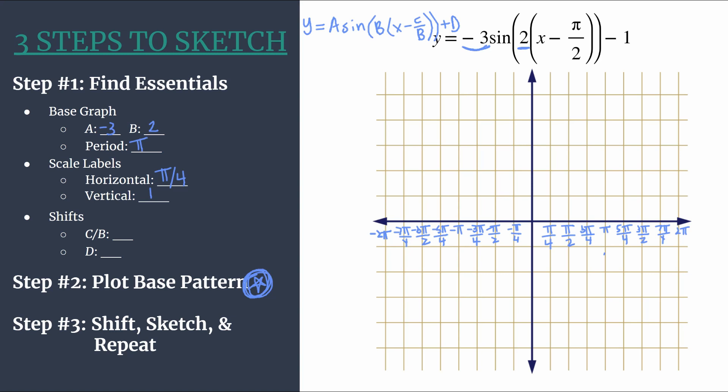All right, so this is the horizontal axis labeled, and now let's label the vertical axis. Just counting by ones, easy enough. Up to five and down to negative five. All right, so before we get graphing, we should go ahead and identify our shifts.